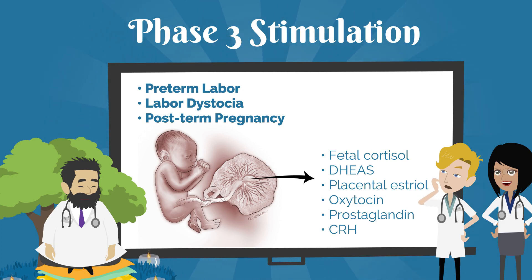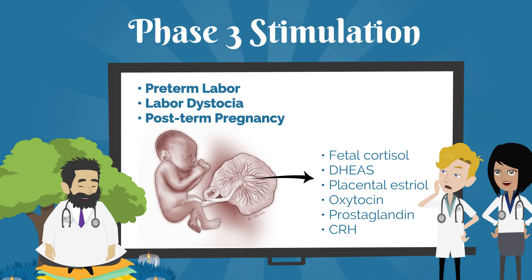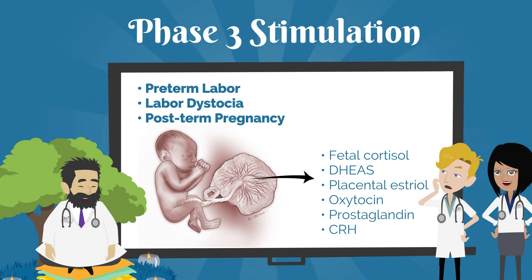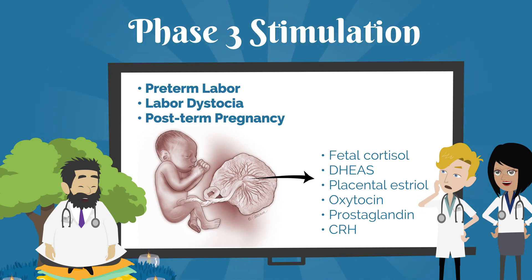In non-human mammals, we know that the fetus has a central role to play in initiating this cascade. However, in humans, this role is not well understood. In theory, the mediators we discussed previously — fetal cortisol, DHEAS, placental estriol, oxytocin, prostaglandin, and CRH — may alter their receptor frequency during phase three to initiate and complete labor. More research is needed to understand the precise mechanism of human parturition.